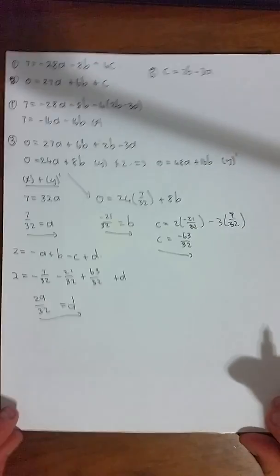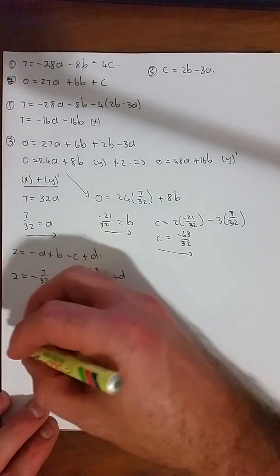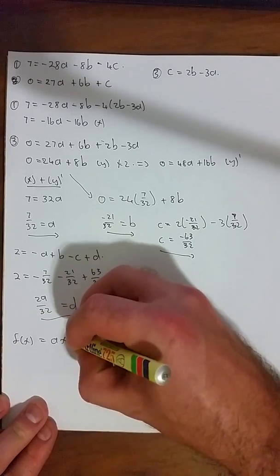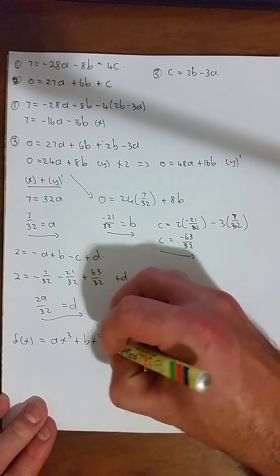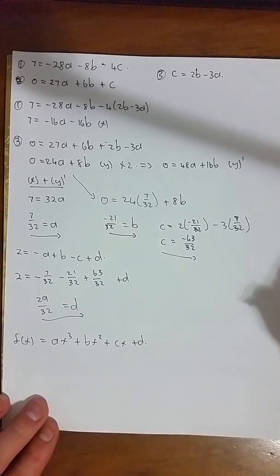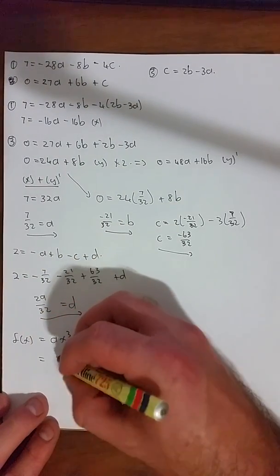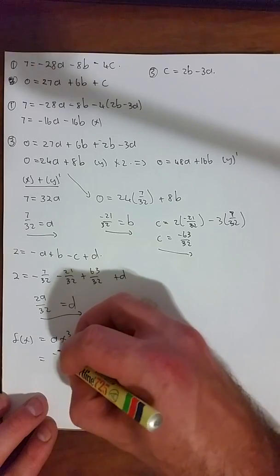And there you have it, a, b, c, and d solved. So now all we need to do is rewrite that in standard form. Original form was ax³ + bx² + cx + d. Now, substituting for a, b, c, and d, we get a with 7/32.